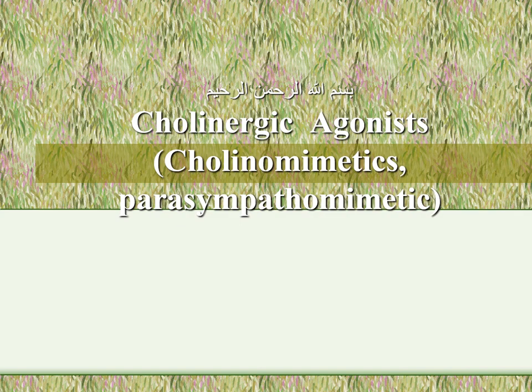In the last lecture before the vacation, we started the pharmacology of the Autonomic Nervous System. First, we revised the physiology of both the Parasympathetic and Sympathetic Nervous Systems. Then we discussed cholinergic transmission occurring on cholinergic neurons — neurons that secrete acetylcholine as a neurotransmitter at the nerve terminal. These cholinergic neurons are found in the pre-ganglionic fibers of both Sympathetic and Parasympathetic Nervous Systems, and also in the postganglionic fibers of the Parasympathetic Nervous System.